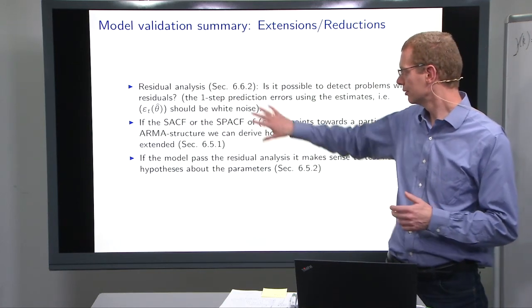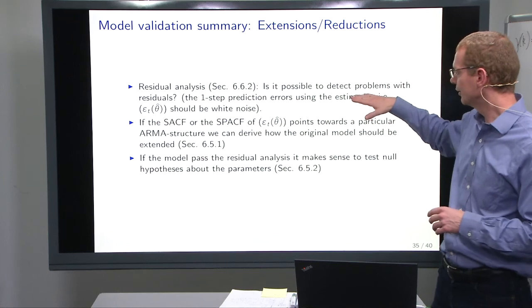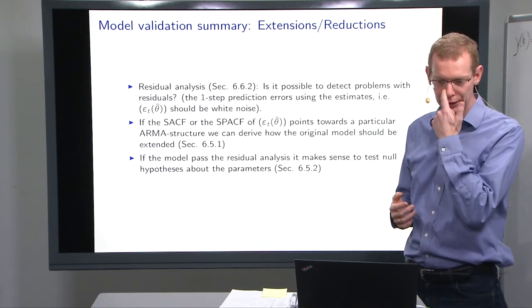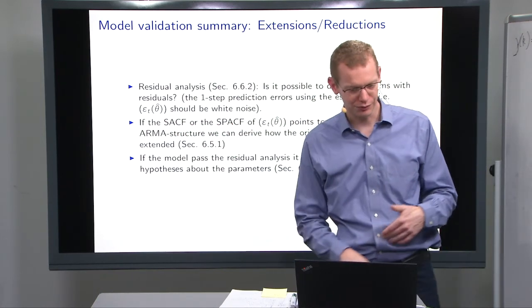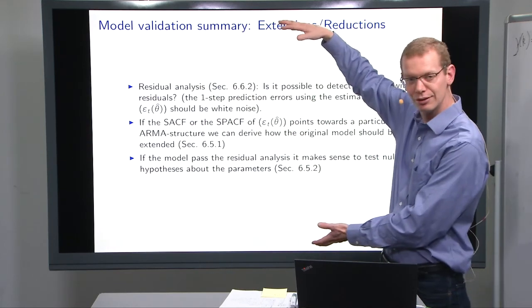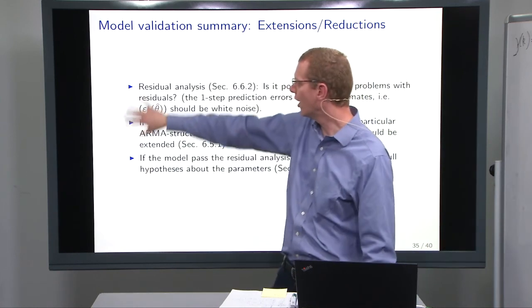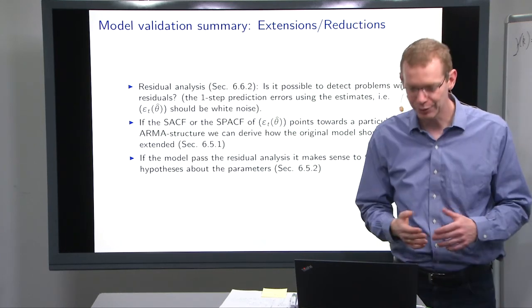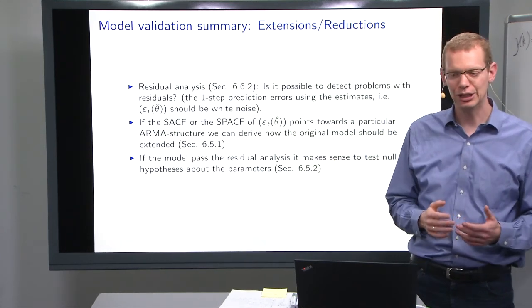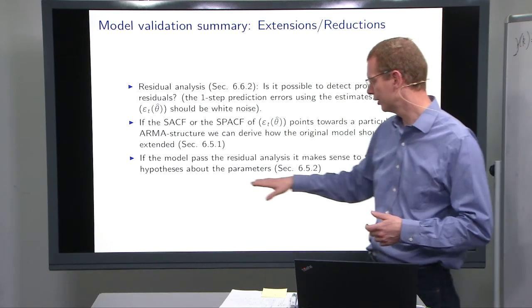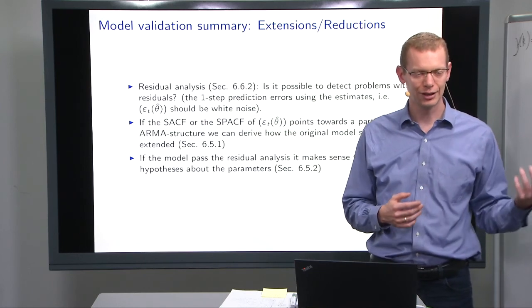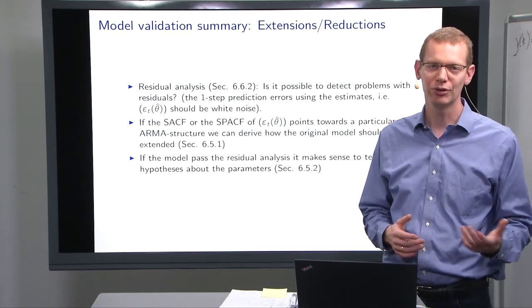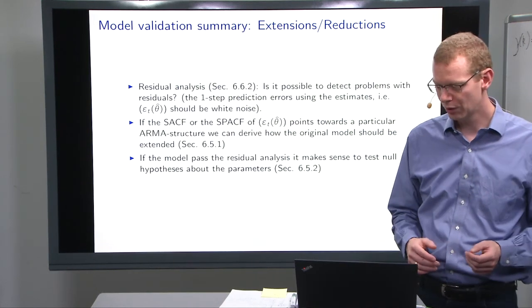When you're doing the residual analysis, you can detect problems with the residuals, looking at the prediction errors. Then you can look at the autocorrelation and partial autocorrelation function. You can say in the model development scheme, you're going down to validation and say, now I know how to update my model. And if the model passed the residual analysis, then the next step is to test the null hypothesis about the parameters, which is, we want to see if the parameters are significantly different from zero, yes or no. How can we do that?